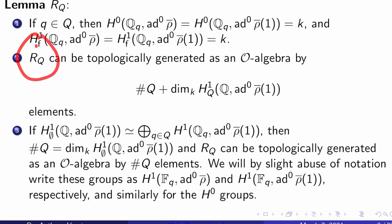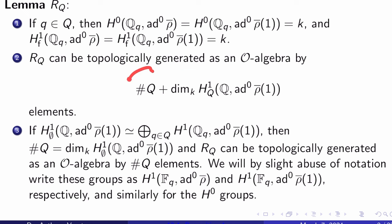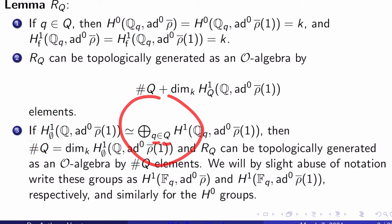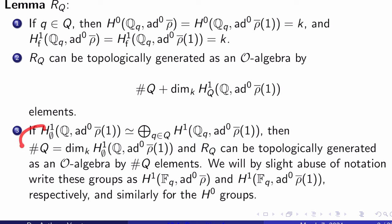Furthermore, the H^1 flat classes of (Q_q, ad^0 rho-bar) and the flat classes of (Q_q, ad^0 rho-bar(1)) are also k. So all four of these things are just k. Second, R_Q, the universal type-Q deformation ring, can be topologically generated as an O-algebra by |Q| plus the k-dimension of H^1(Q_q, ad^0 rho-bar(1)) elements. And third, if H^1(∅, ad^0 rho-bar(1)) decomposes as a direct sum over primes q in Q of H^1(Q_q, ad^0 rho-bar(1)), then |Q| equals the k-dimension of H^1(∅, ad^0 rho-bar(1)), and R_Q can be topologically generated by just |Q| elements.